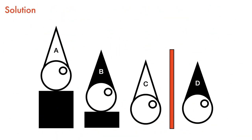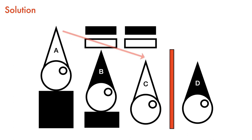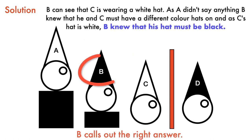Each prisoner knows there are 4 hats — 2 black and 2 white. If prisoner A observes that B and C have the same colored hats, he would know his hat is the opposite color. However, since B and C have different colored hats, A doesn't say anything. After waiting about four minutes, prisoner B calls out the right answer. B can see C is wearing a white hat. If B were also wearing white, A would have seen two white hats and would have spoken up. Since A didn't, B knows he and C have different colors — and since C's hat is white, B's must be black. All four prisoners are freed.